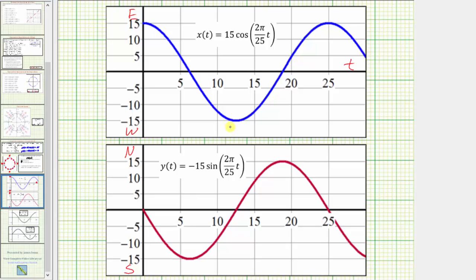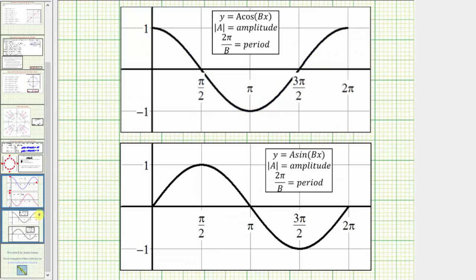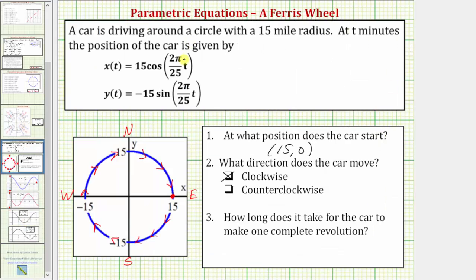And another way to recognize how long it takes to make one complete revolution around the circle, would be to remember that when we have functions in the form y equals a cosine bx, or y equals a sine bx, the period is equal to two pi divided by b. So remembering that formula,